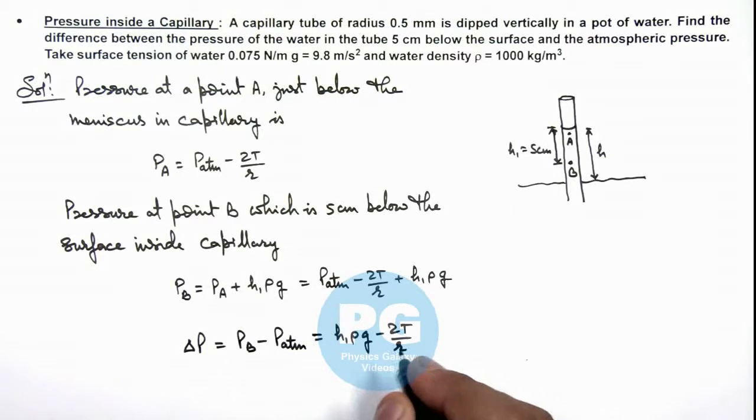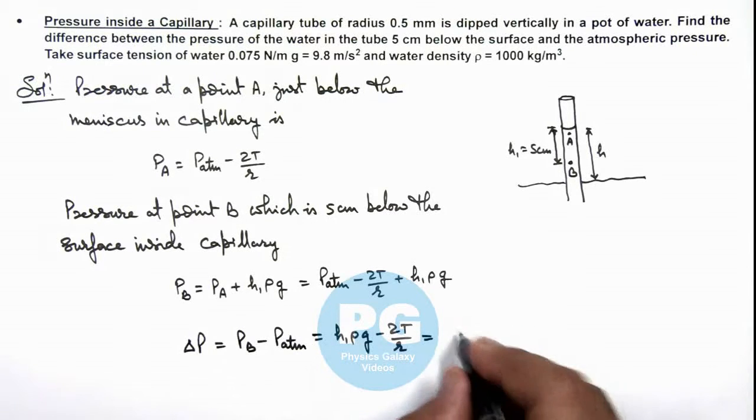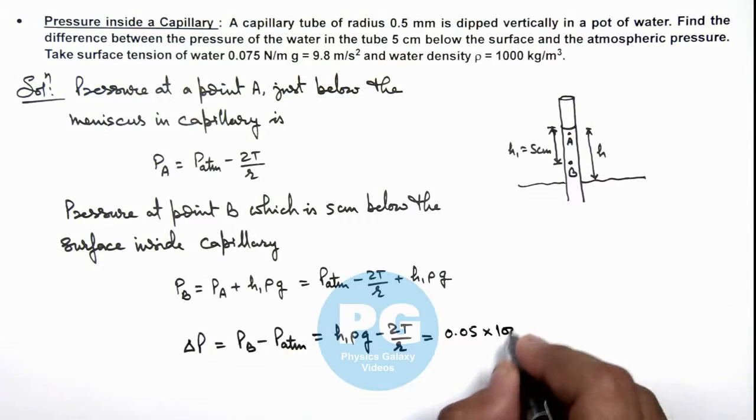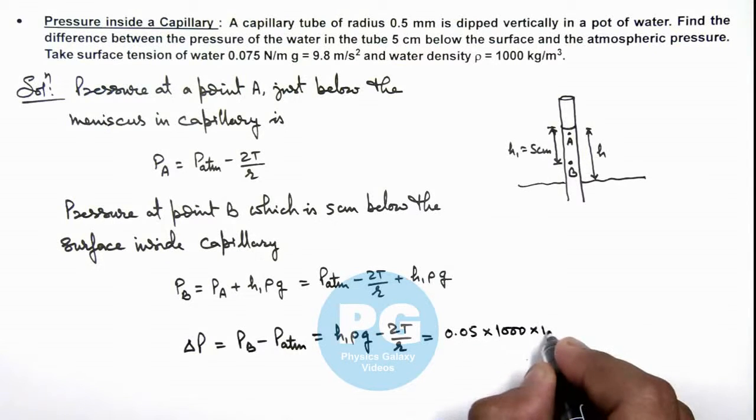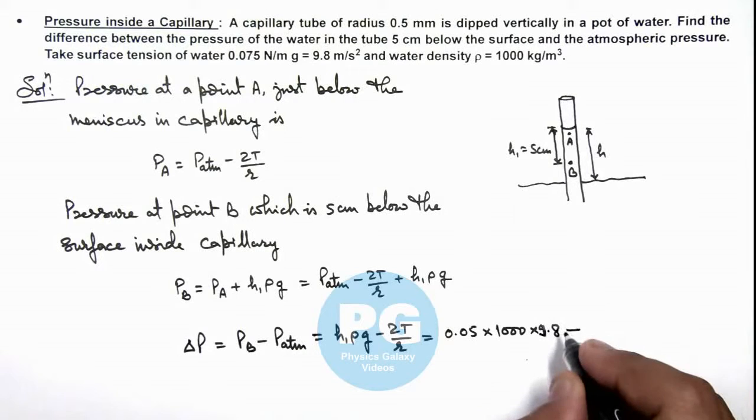So if we substitute the numerical values, h₁ is 0.05, density of water is 1000, multiplied by g we take as 9.8 in this situation, minus 2T/r.